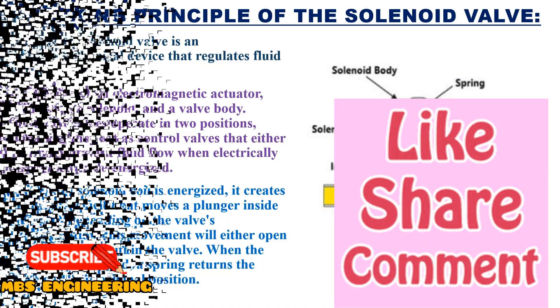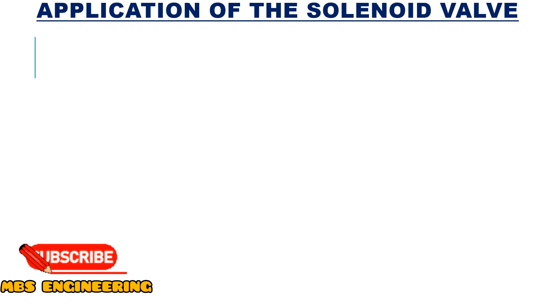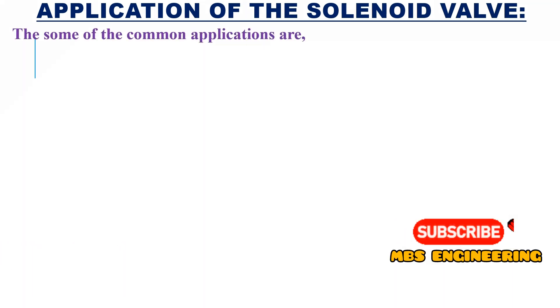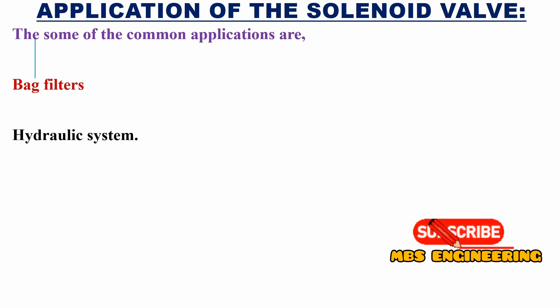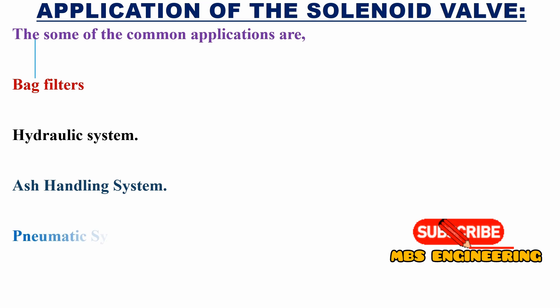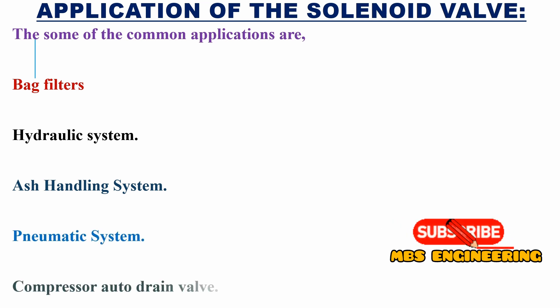Next, we will learn and understand the applications of the solenoid valve. Some of the common applications are: it is used in bag filters, it is used in hydraulic systems, it is used in ash handling systems, it is used in pneumatic systems, and it is used in compressor auto drain valves.